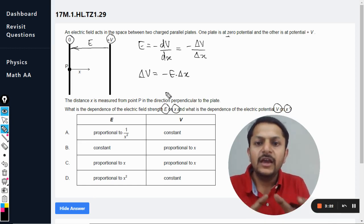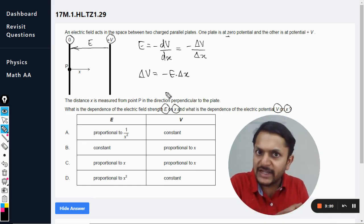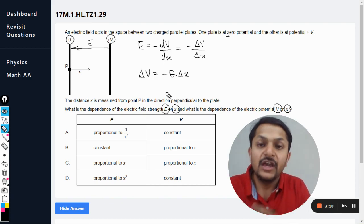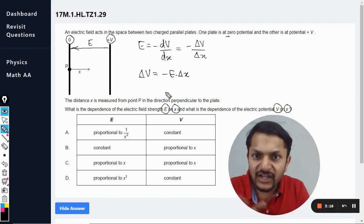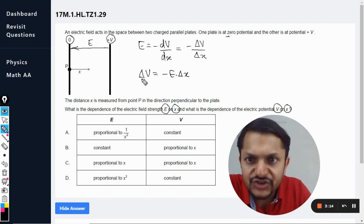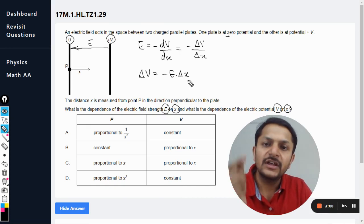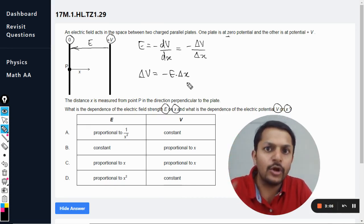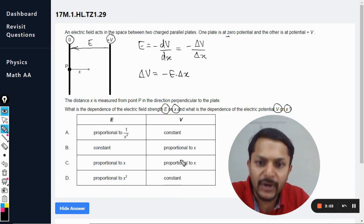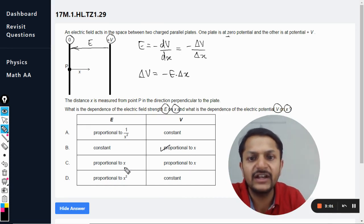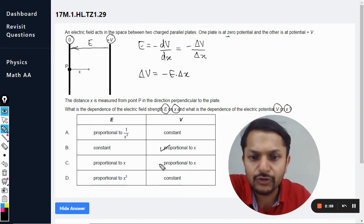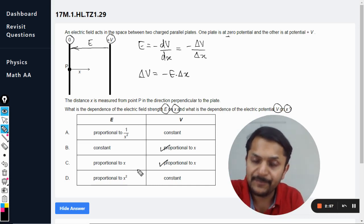So thereby we have this variation: E dot delta x is equal to delta V. Clearly it is evident here that yes, the potential, the change in potential or the potential at any point, is dependent on x, and there is even linear variation there—not parabolic, not hyperbolic, nothing—but it is proportional to x. So definitely the answer is coming out to be either B or C. It is proportional to x. This is one explanation.